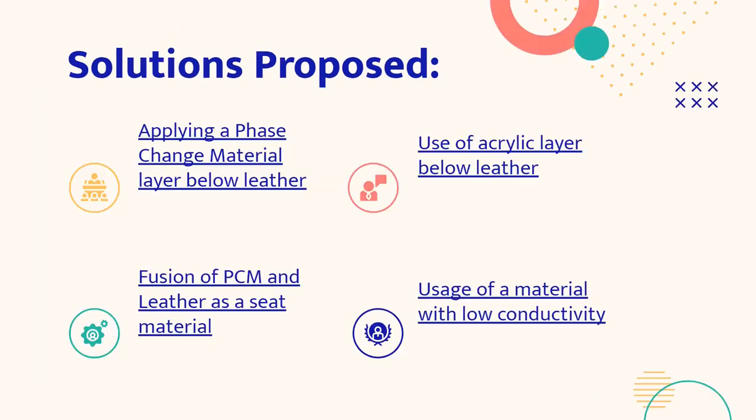What are the solutions now proposed by us? Firstly, we can apply a phase change material below the leather. We will be dealing more about this solution in the further slides. Secondly, we can use acrylic layer. Acrylic layer is somewhat softer and it can absorb a large amount of heat so that the temperature of the bike seat is regulated.